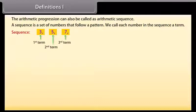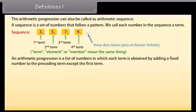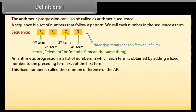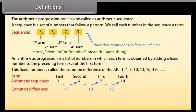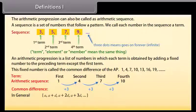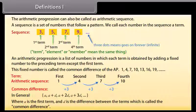An arithmetic progression is a list of numbers in which each term is obtained by adding a fixed number to the preceding term, except the first term. This fixed number is called the common difference of the AP. In general, we can write an arithmetic sequence as: a, a+d, a+2d, a+3d, and so on, where a is the first term and d is the common difference.